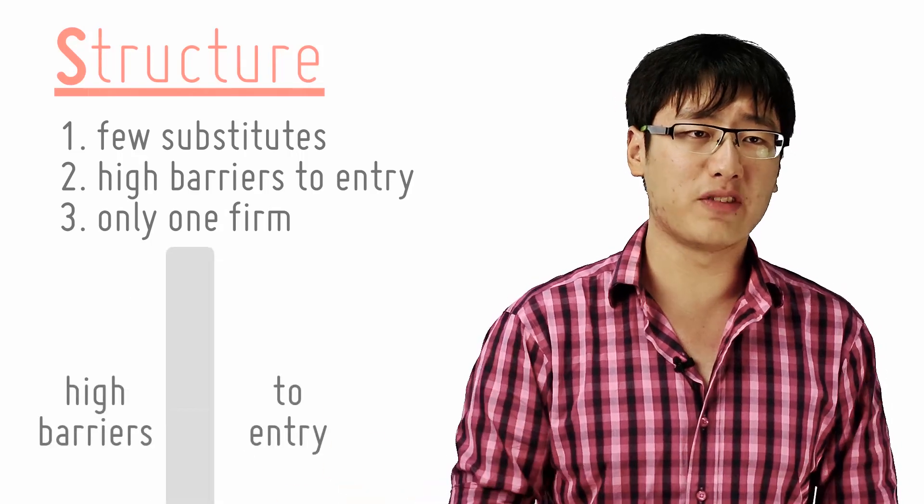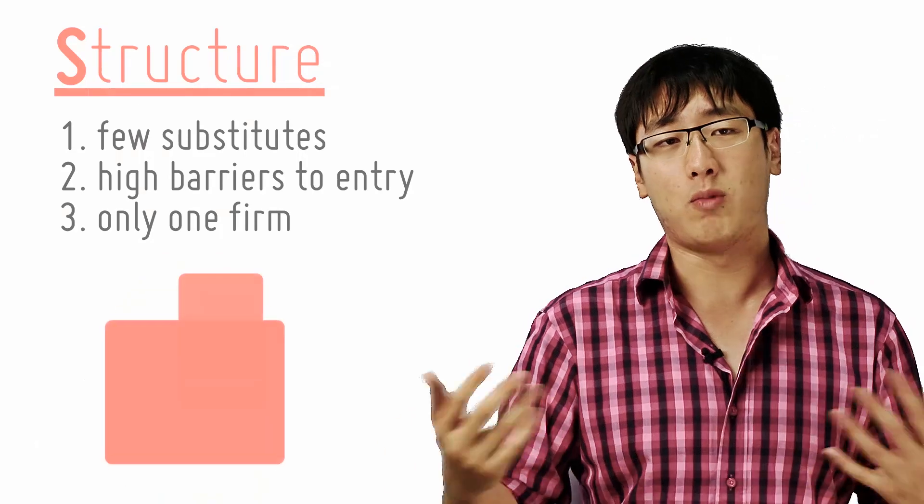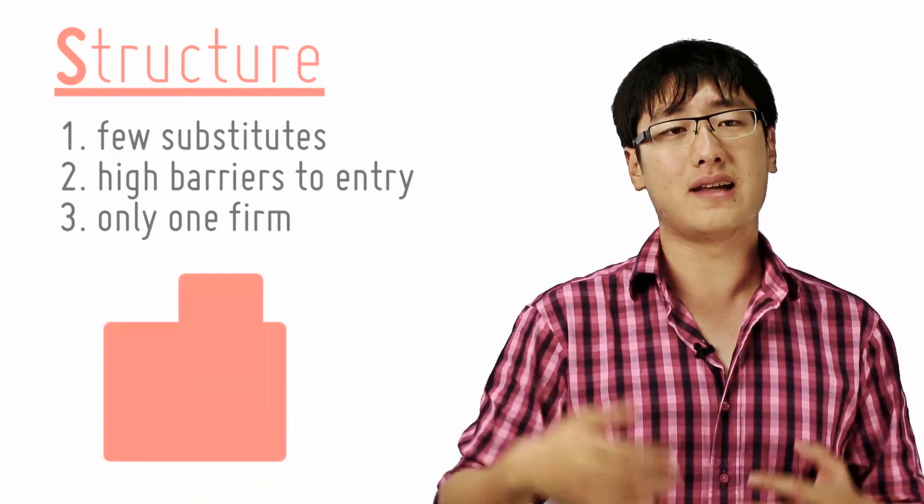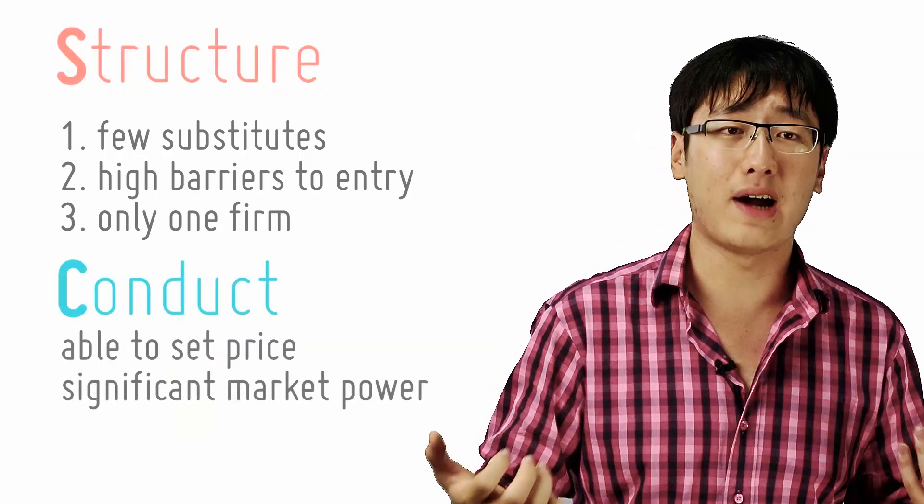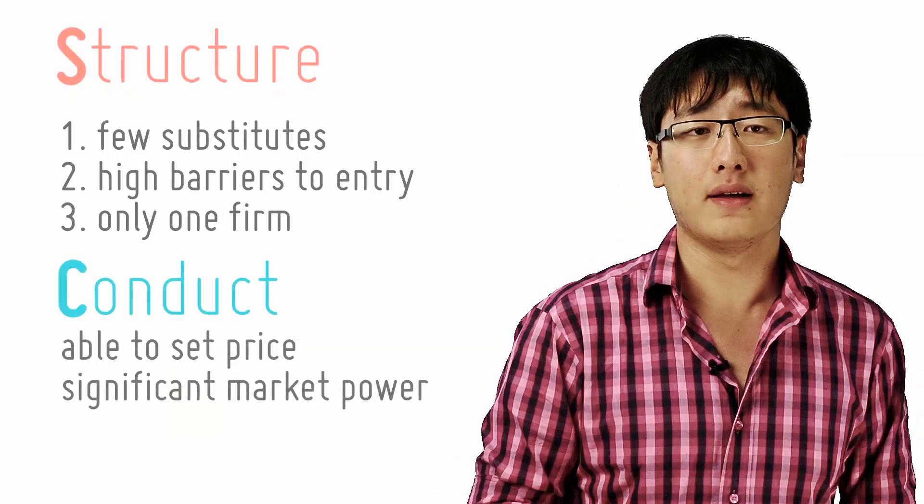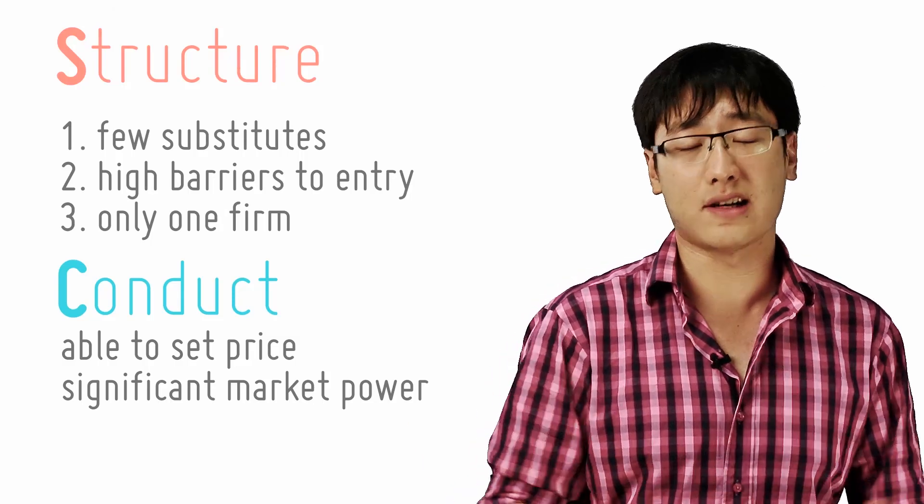Now for the structure of monopolies, monopolies have very high barriers to entry. There is only one firm in a monopoly, and since there is only one firm, the product is usually unique. This causes monopolies to be able to set prices instead of being a price taker like a perfectly competitive firm. Don't worry, we'll take you through this in the next few checkpoints.